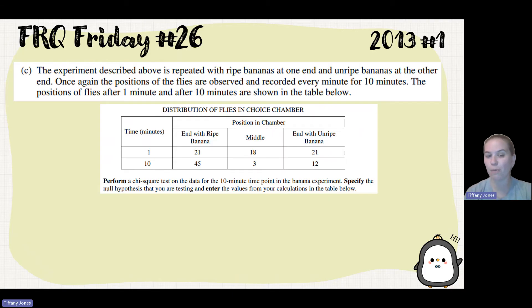They then ask us to perform a chi-square test on the data for that 10-minute period and specify the null hypothesis that we're testing and enter the values into our table. So there's this thing called chi-5 that was made by Jay Daly, and it's to help us make sure we have the five parts of chi-square. So since we were talking about chi-square, I figured we should go over those five things.